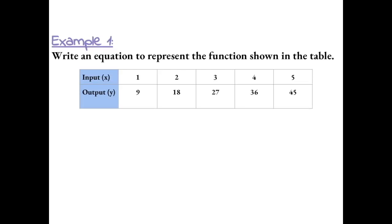Write an equation to represent the function shown in the table. We want to write an equation that's going to help us find our output with any given input value. So we want to look for a pattern between our inputs and outputs. To get from our first input 1 to our output, we can do times 9. And if this rule works for every input and output on this table, then we can use that to write our equation.